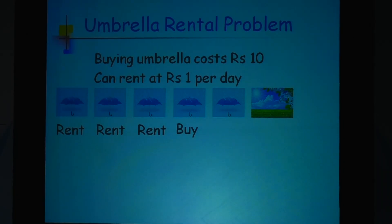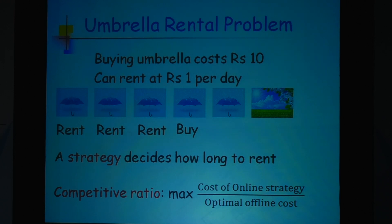What is the loss? You end up paying 13 rupees, whereas somebody who knew the future could have just paid 10 rupees. An online algorithm is some sort of strategy which decides what to do at every step without knowing what the future would be.